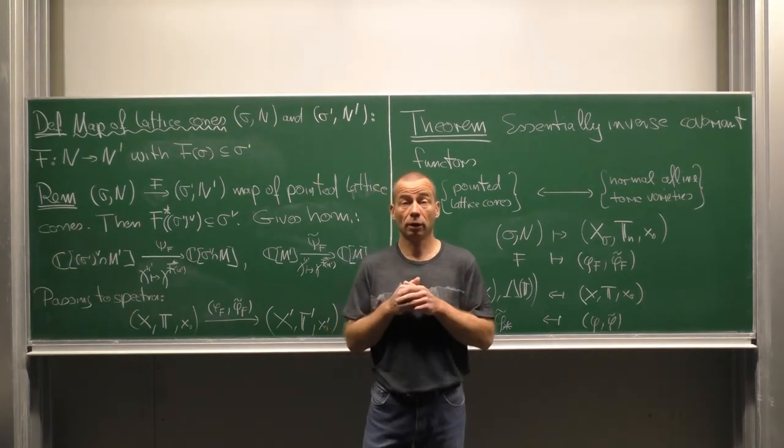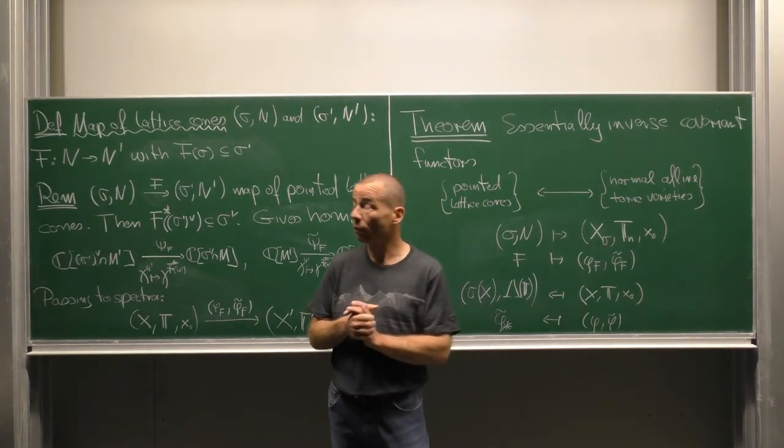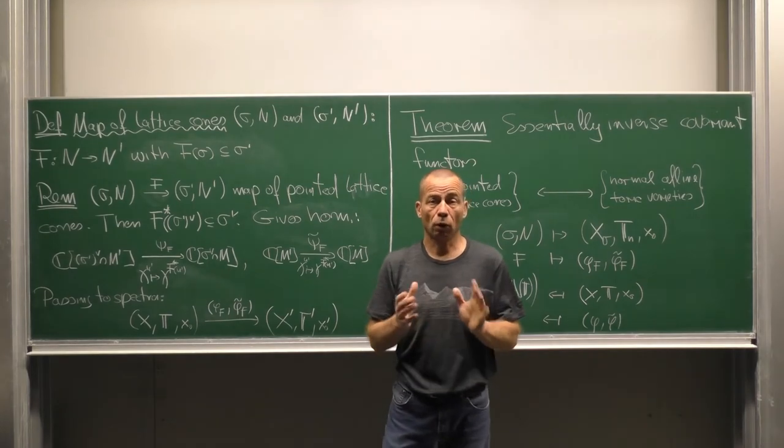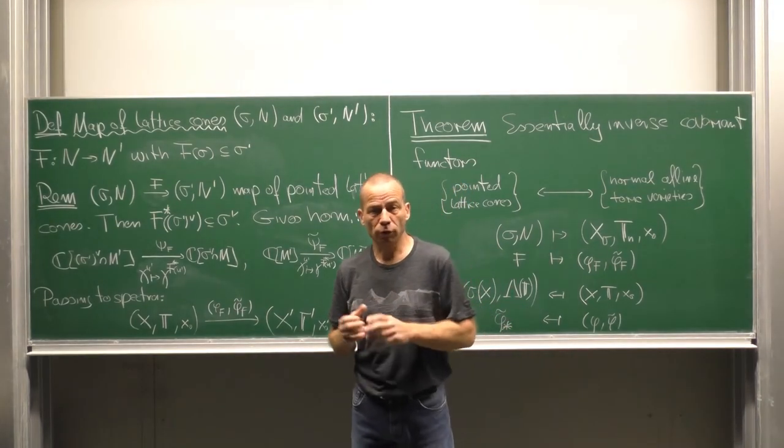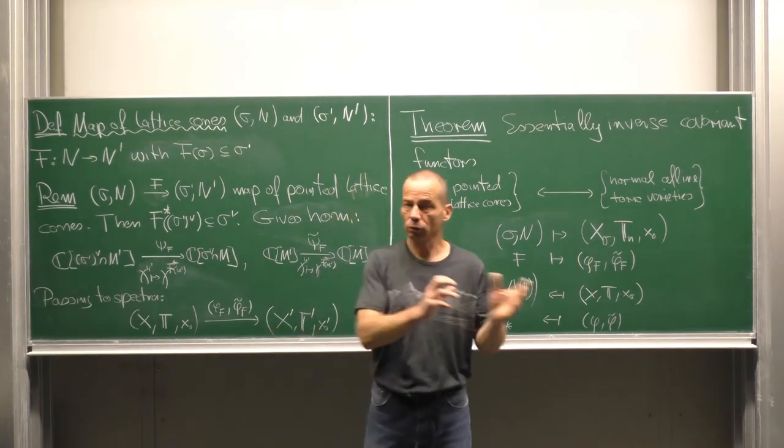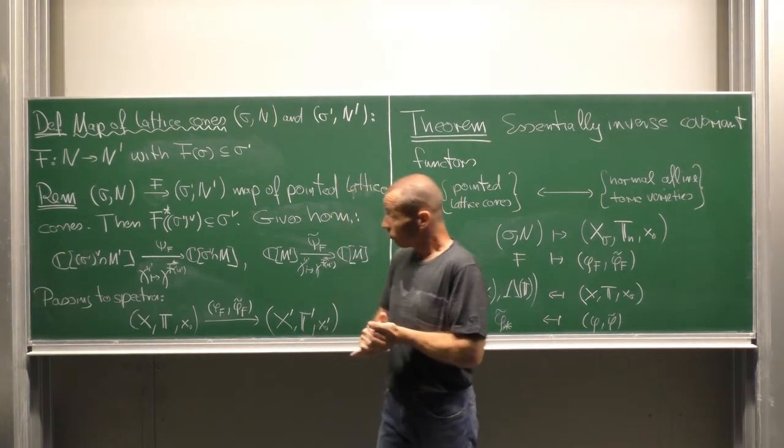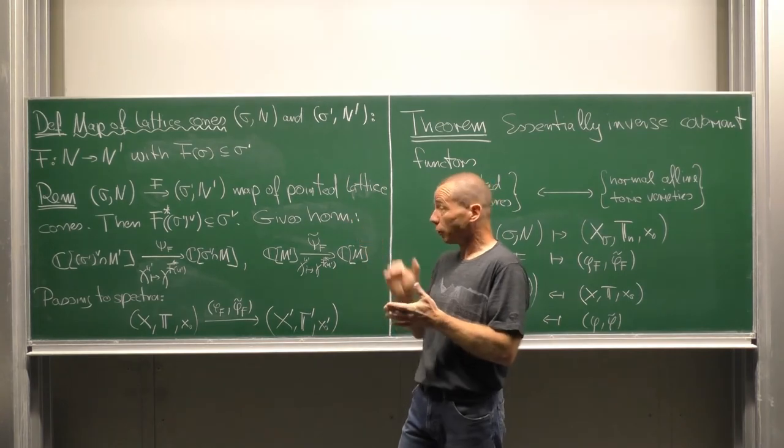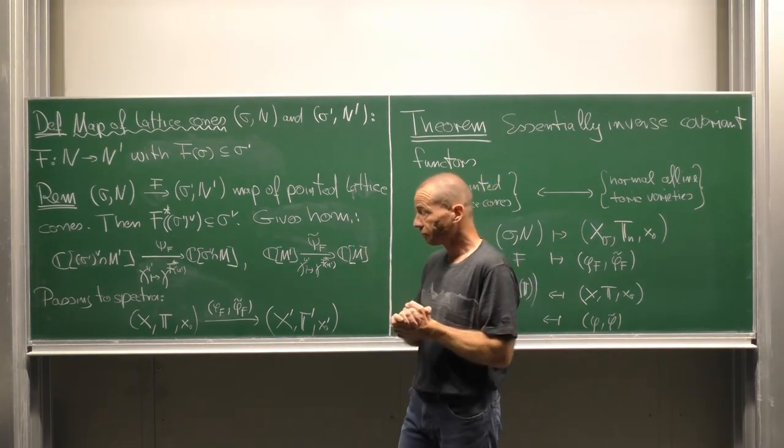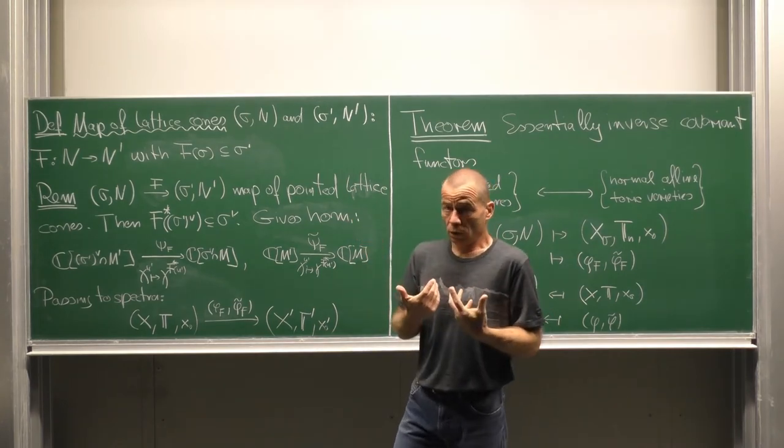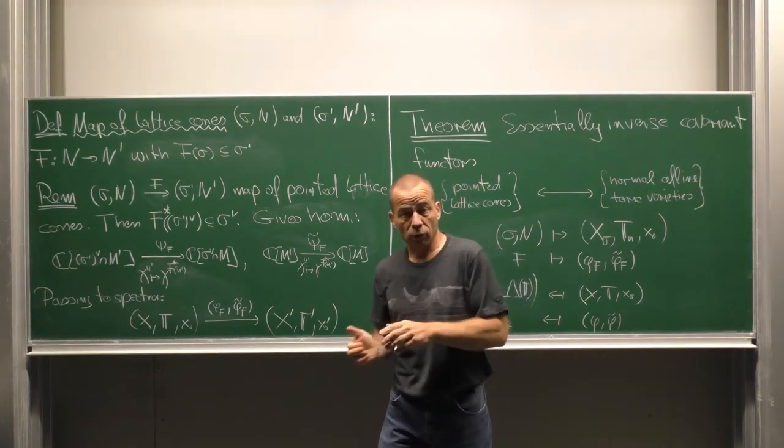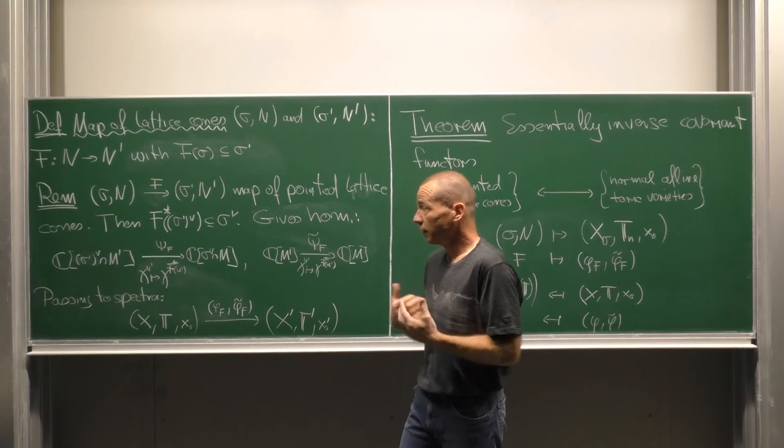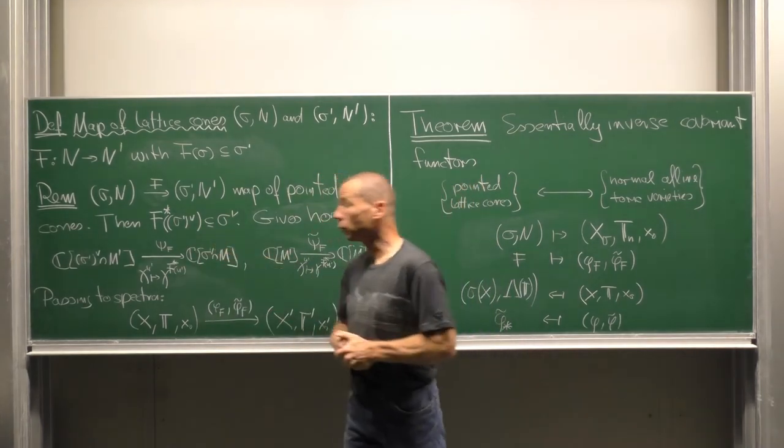We are going to make our construction functorial. First, what is a map of lattice cones? This is just a homomorphism sending one cone into the other. Now, given such a map of pointed lattice cones, also the dual map is a map of the dual lattice cones. That means it sends one dual cone into the other.